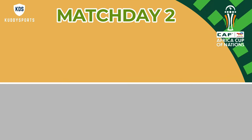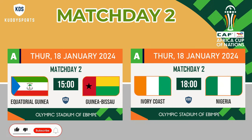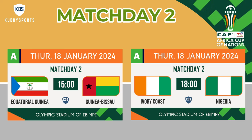Match Schedule and Fixtures for Match Day 2. Thursday, 18 January 2024: Equatorial Guinea vs Guinea-Bissau. Ivory Coast vs Nigeria.